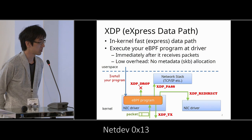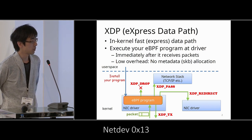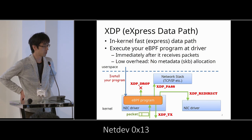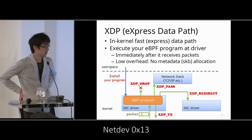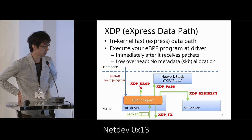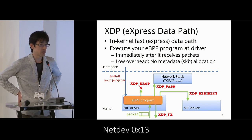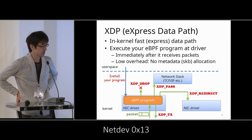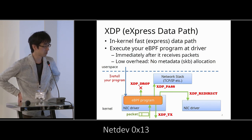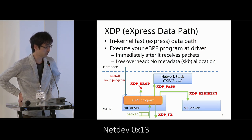Let me start with some basic background on XDP. XDP is eXpress Data Path — you can install your eBPF program at the NIC driver. The driver runs the BPF program immediately after it receives packets, and the program can modify the packet or determine how to handle it: drop, pass to the upper layer network stack, send back by TX, or redirect to another driver.